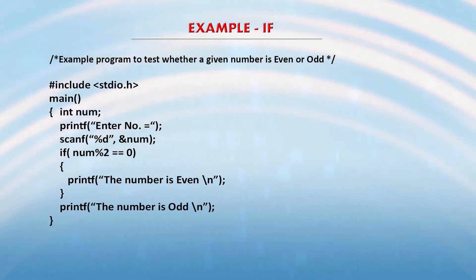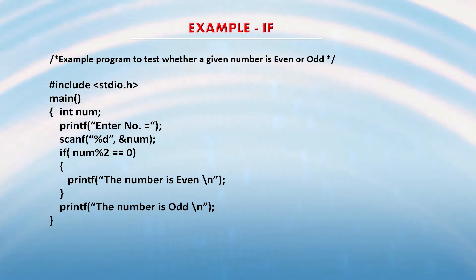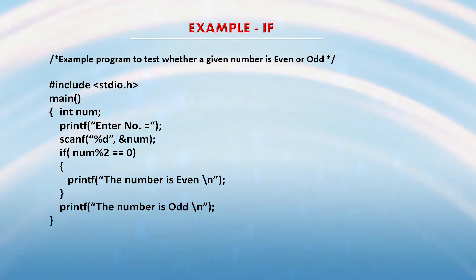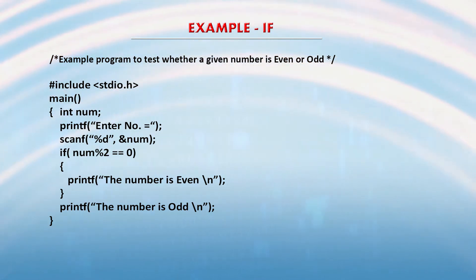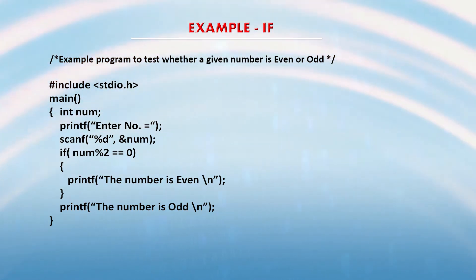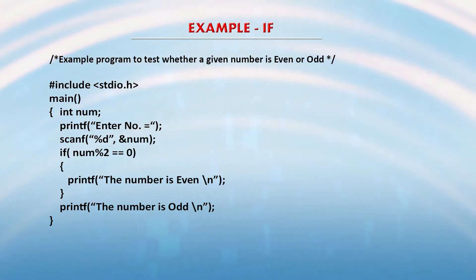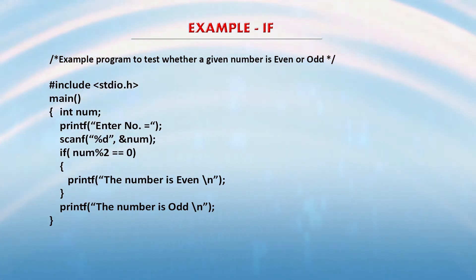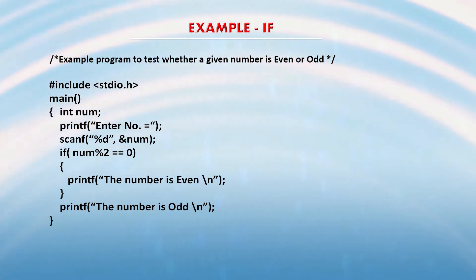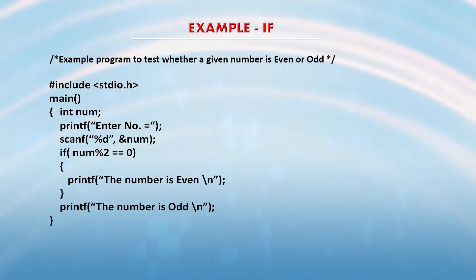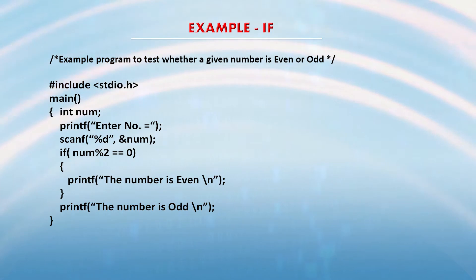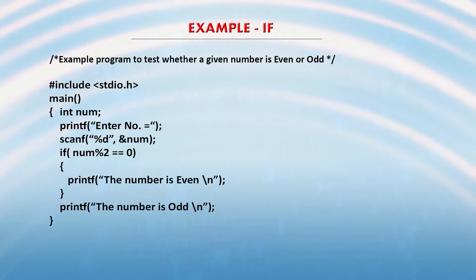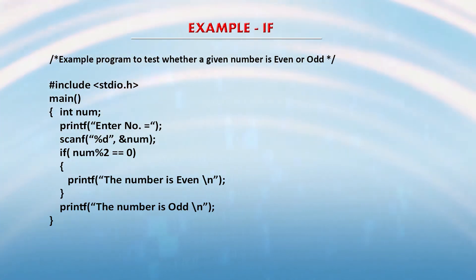If num % 2 == 0, this condition is true — it goes into the opening and closing braces and executes the statements for the if block, printing that the number is even. But if the if statement is false, the statement immediately outside the if construct is executed. For example, if you enter 6, then 6 % 2 == 0, so it prints that the number is even. But if you enter 5, then 5 % 2 is not equal to 0, so it prints that the number is odd. I hope you understand how the if construct works.